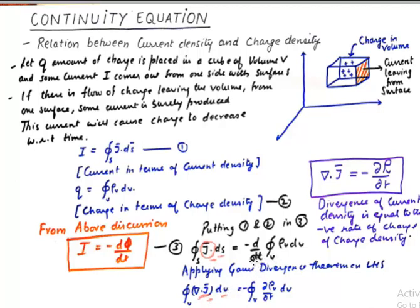And on this side, I have just taken this d by dt inside of the integral and that converts to curly rho V by curly T, and this is a volume integral. So now we have volume integrals on both the sides, so I can take this equation to be the final equation for continuity.